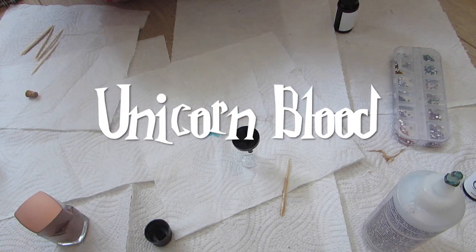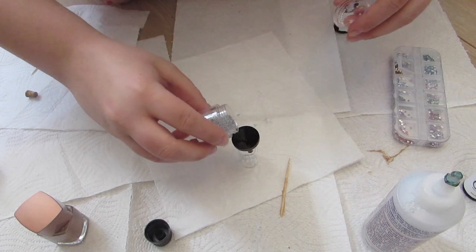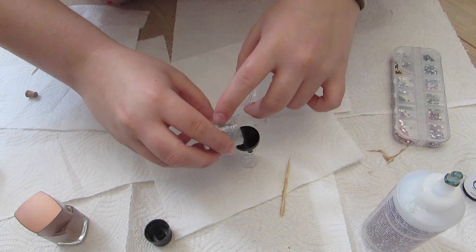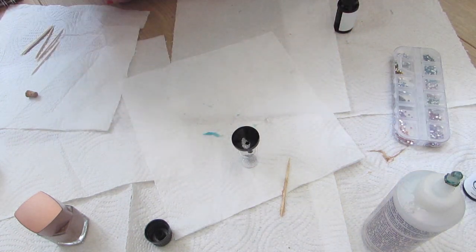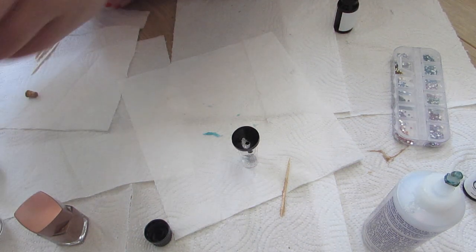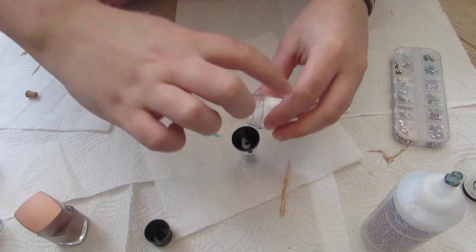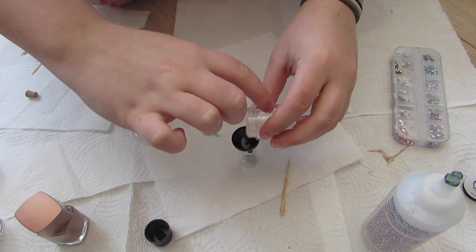Now this next one is Unicorn Blood which is more of an ingredient than a potion but I thought it would fit in. And it is described as being silver. This one is really simple to make. I've literally just used silver glitter and clear glue and mixed it all together. I used a little bit of this white glitter but that's not necessary.